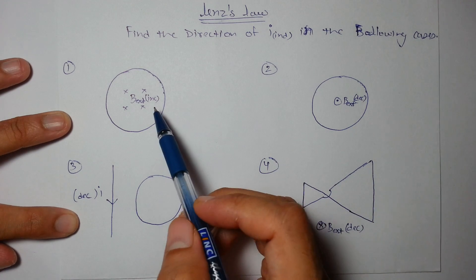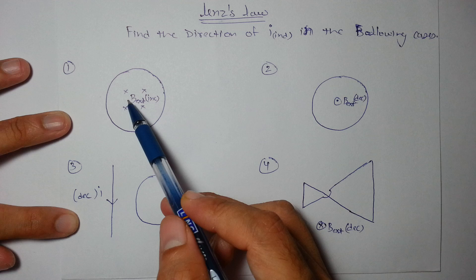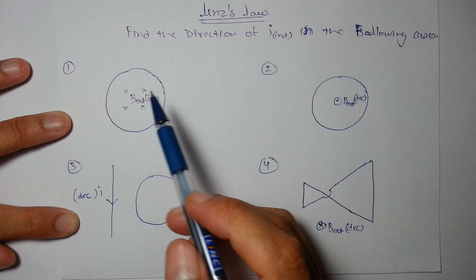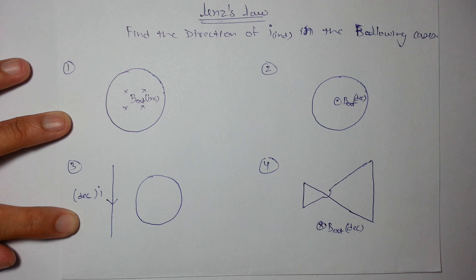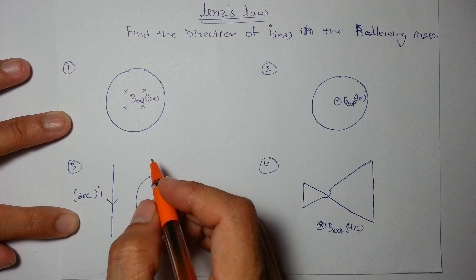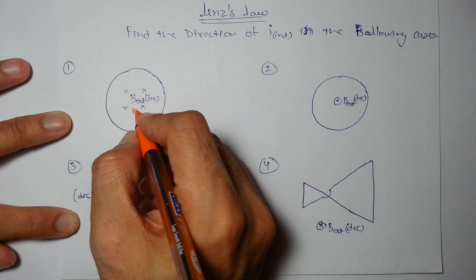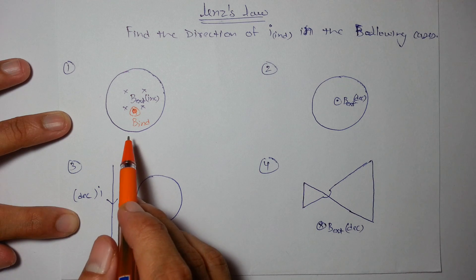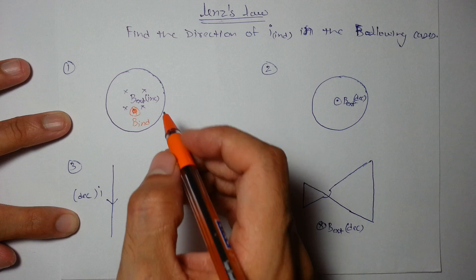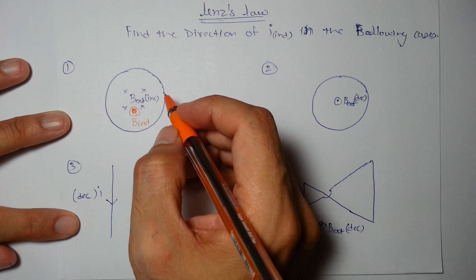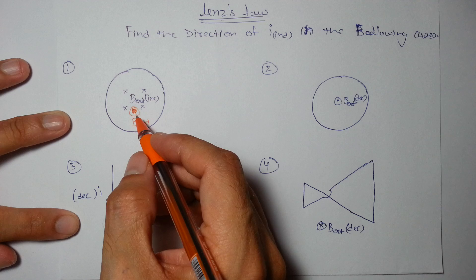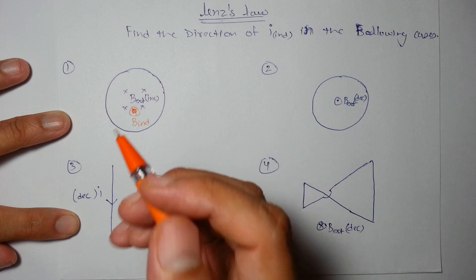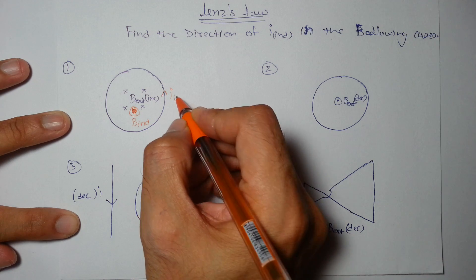The external magnetic field is into the plane of paper and it is increasing. It will oppose the change, and since the change is an increase in the inward field, the induced field will be out of the plane of paper. Using the right-hand thumb rule, if the induced field is outward, the induced current will be anti-clockwise.